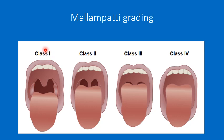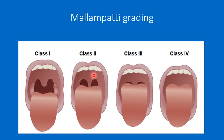In Mallampati grading, grade 1 shows pillars, fauces, tip of the uvula, soft palate, and hard palate. In grade 2, only the base of the uvula, pillars, part of fauces, soft palate, and hard palate are visible. In Mallampati grade 3, only soft palate and hard palate are visible. In grade 4, only hard palate is visible. Grade 3 and grade 4 indicate difficult intubation.